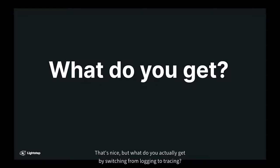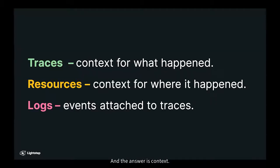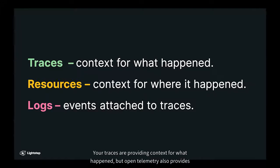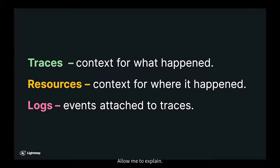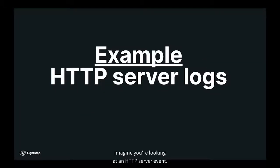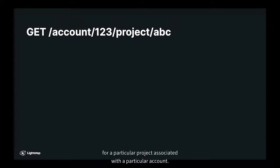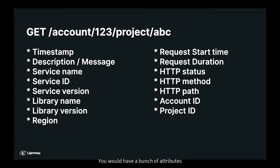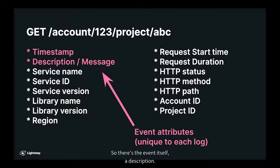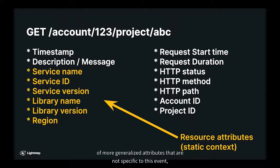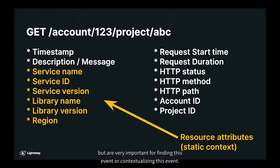But what do you actually get by switching from logging to tracing? The answer is context. Your traces are providing context for what happened, but OpenTelemetry also provides resources, which is context for where things are happening. Imagine you're looking at an HTTP server event — what kind of attributes would these HTTP logs have? Let's say you have a GET request for a particular project associated with a particular account. You would have a bunch of attributes that you'd be interested in indexing this log with, and a couple of those attributes are unique to the event itself.